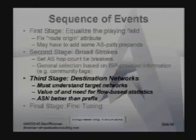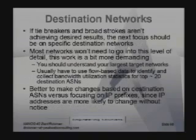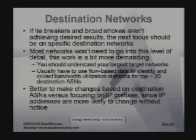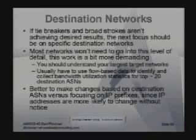If that's not good enough, there's a next step: destination network-based balancing. If your broad strokes aren't working and your communities aren't working, if you have performance issues that metrics just aren't handling for one specific network, you're going to want to start targeting specific destination networks. Most of the time you won't need it. If you do need it, it's a lot more demanding — do destination ASNs rather than destination prefixes, and only go down to destination prefixes for fine-tuning.